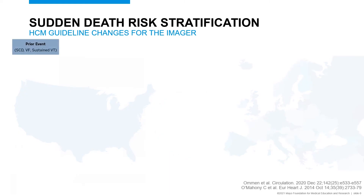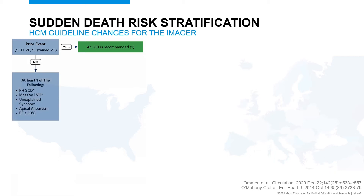The first part of the 2020 ACC/AHA sudden cardiac death risk stratification decision-making tree is that a resuscitated cardiac death or an objective sustained VT or VF event is a reason to implant a defibrillator. Without such an event, we then look at five different criteria. The first is a family history of sudden cardiac death in a first-degree relative — a parent, sibling, or child.